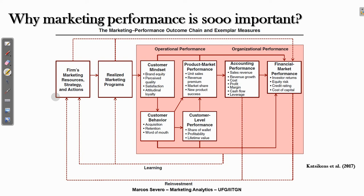We closed the last lecture with this illustration from Katsikeyas and colleagues. They developed an important study in marketing where they collected almost 1,000 empirical studies that attributed performance as a dependent variable. The most important thing of this illustration is that they categorized performance into two big dimensions: operational performance and organizational performance. Within these dimensions, they identified a series of groups — marketing performance measures that are usually the dependent variables of marketing empirical models.